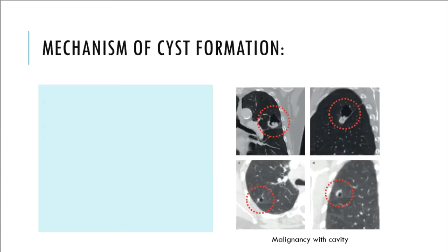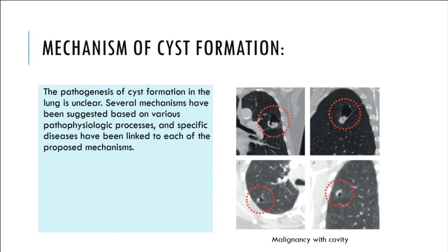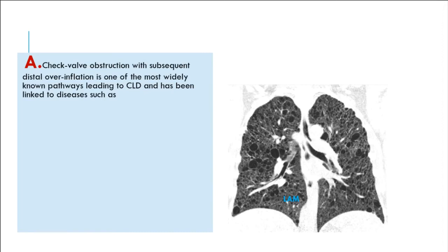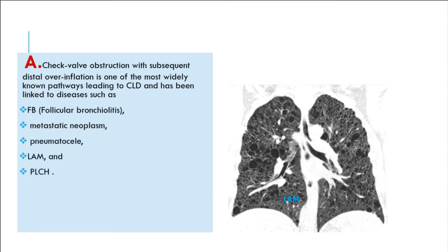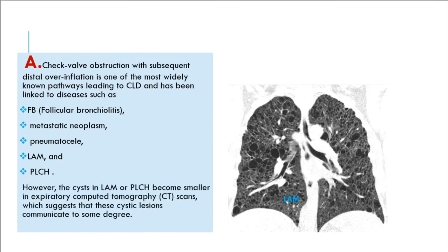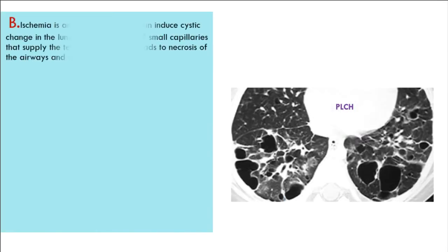Mechanism of cyst formation: the pathogenesis of cyst formation in the lung is unclear. Several mechanisms have been suggested based on various pathophysiologic processes, and specific diseases have been linked to each proposed mechanism. A. Check valve obstruction with subsequent distal overinflation is one of the most widely known pathways leading to CLD, linked to diseases such as follicular bronchiolitis, metastatic neoplasm, pneumatocele, LAM, and PLCH. However, cysts in LAM or PLCH become smaller on expiratory CT scans, suggesting these cystic lesions communicate to some degree.